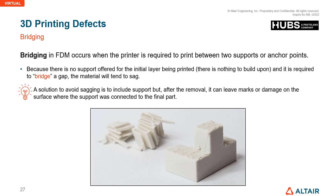Bridging in FDM occurs when the printer is required to print between two supports or anchor points. If no additional support is created, you may see sagging issues. A solution is to include supports, but after removal they can leave marks or damage on the surface, so post-processing at that location may be required.